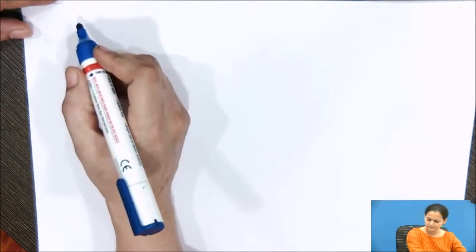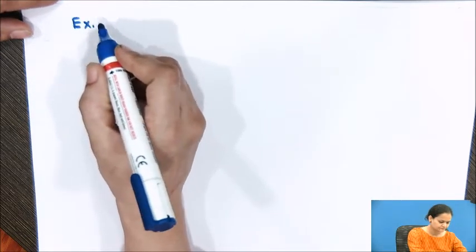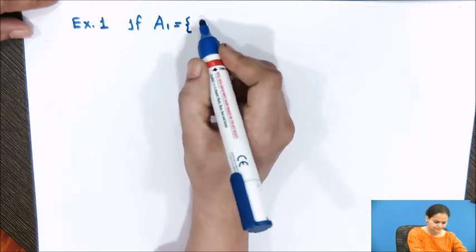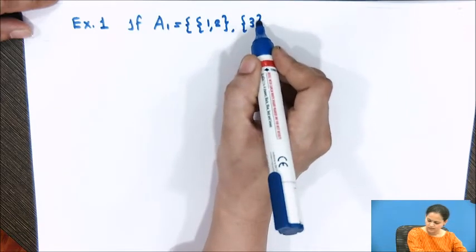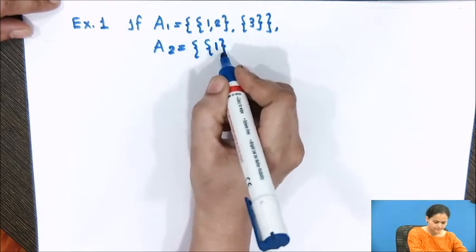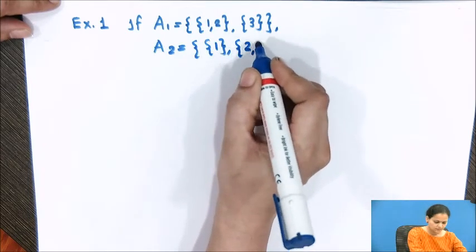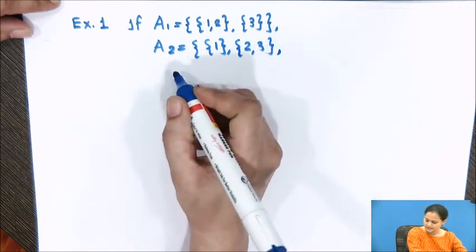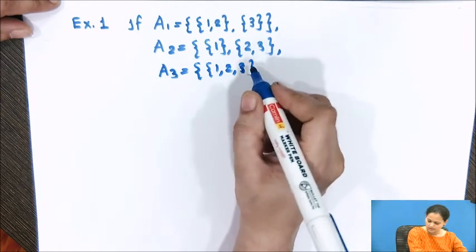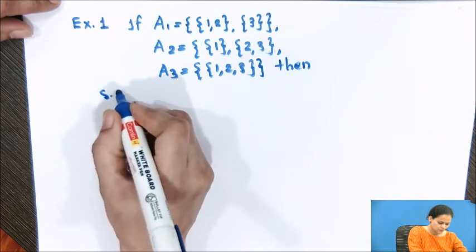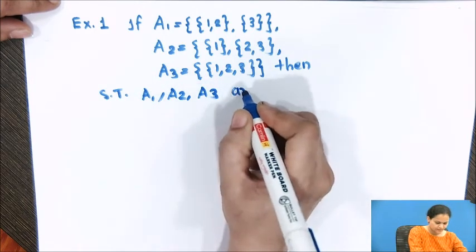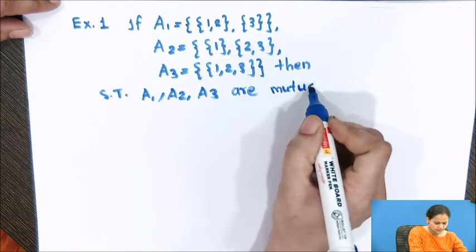Here comes the first example. If A1 equals {1, 2, 3}, A2 equals {1, 2, 3}, and A3 equals {1, 2, 3}, then show that A1, A2, and A3 are mutually disjoint.